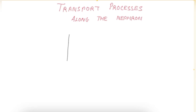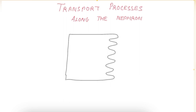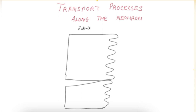Today we are going to study transport processes along the nephron. I will be drawing a tubular epithelial cell — an epithelial cell which lines all along the tubule.